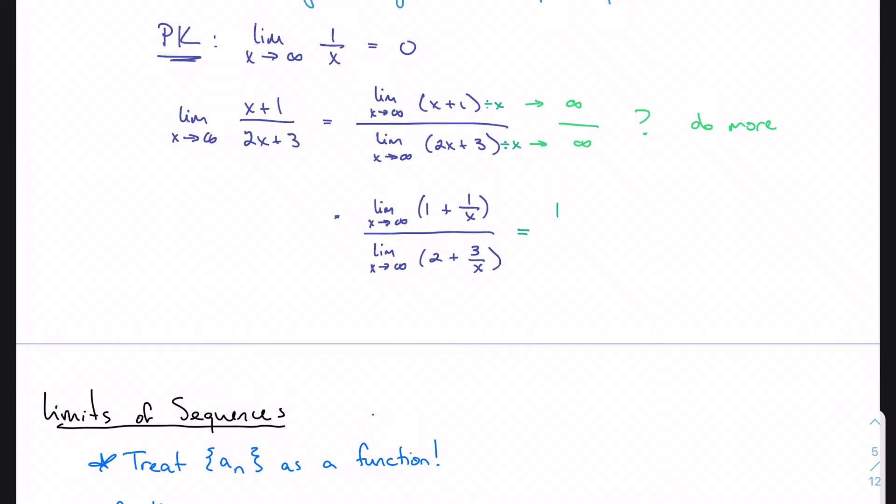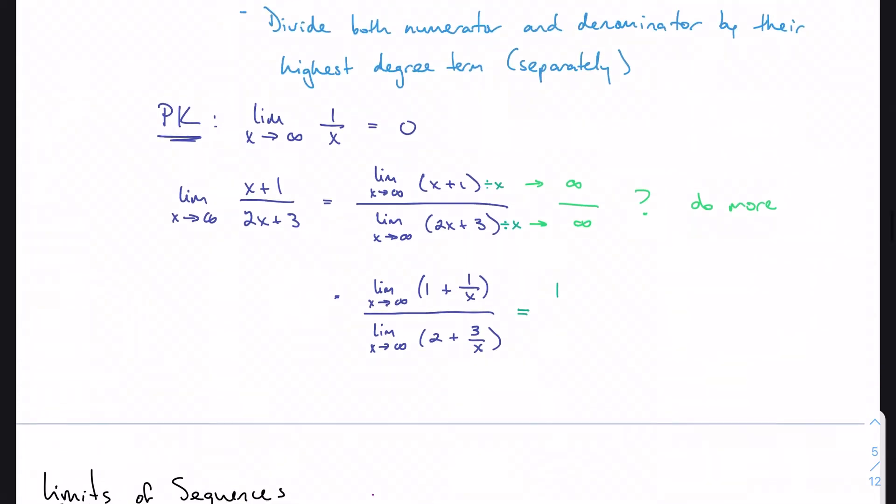And we just learned that the limit, or we just reviewed that the limit of 1/x is 0. As x gets bigger and bigger, 1/x gets smaller and smaller. So this is going to approach 0.